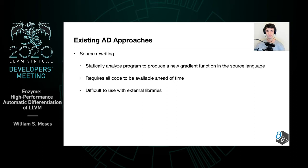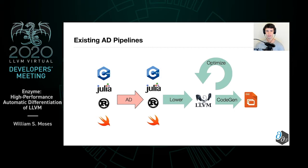All of these tools tend to follow the same pipeline. First you have the code in the original source language, which is differentiated by the tool, producing more code in the original source language. This is then lowered and optimized to produce the final resultant binary. As we'll see, this pipeline is not necessarily optimal.